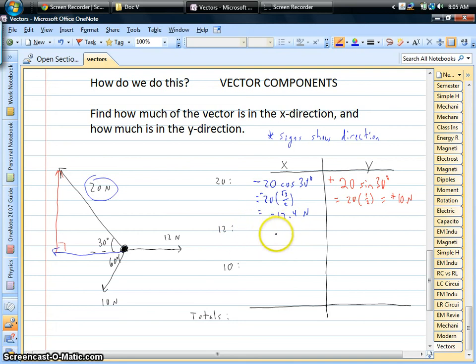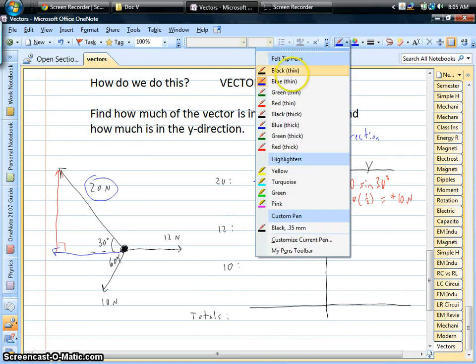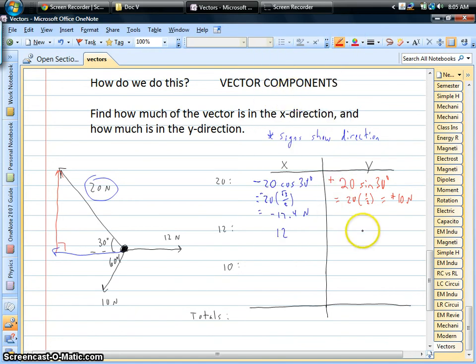Now, the 12 newton force. This one's a little bit easier because all of it's going to the right. It's all in the x-direction. There's nothing going up or down. So, there is no y component. We'll put a zero in that column.